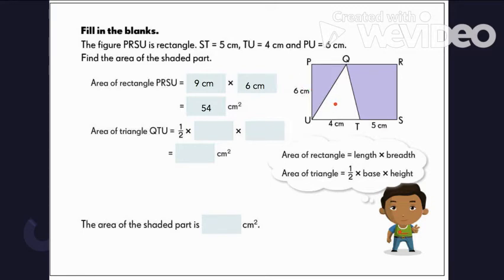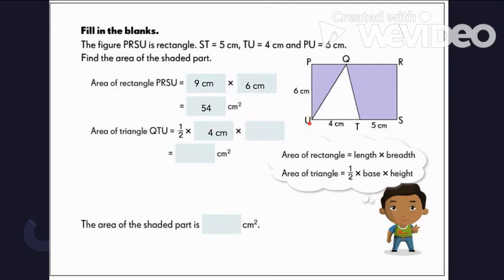Now let's get the area of the triangle: 1/2 times base times height. The base is equal to 4 cm. And the height of the triangle is actually the same as the width or the height of the rectangle. So we'll use that dimension to get the height of the triangle. So 4 times 6 gives us 24, divided by 2 is equal to 12 square cm.